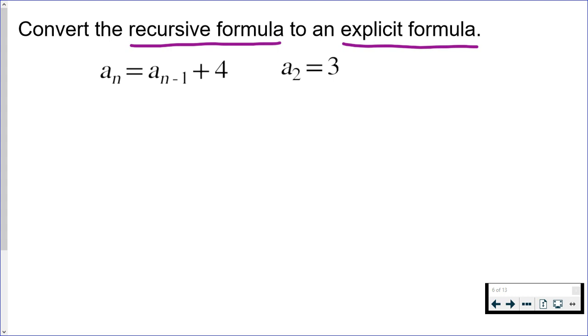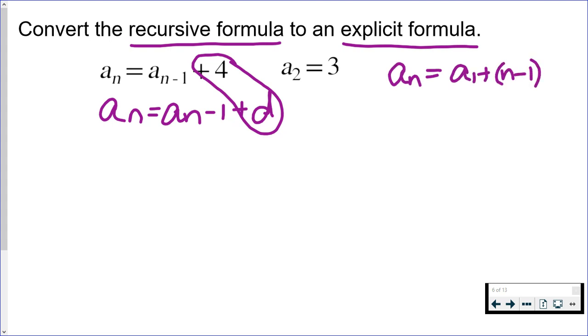If you compare it to the one that we're given, right away we know the common difference D equals four. In order to write the explicit formula, we are also going to need to find our first term. We already have D.